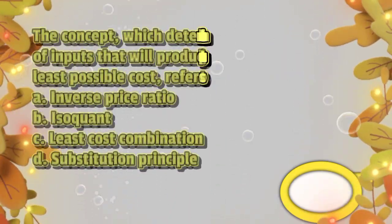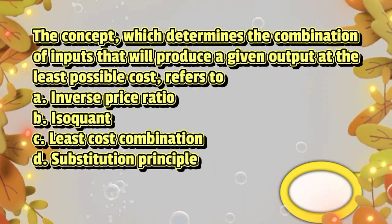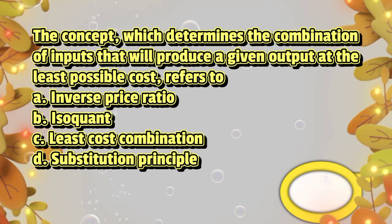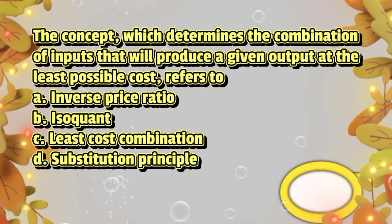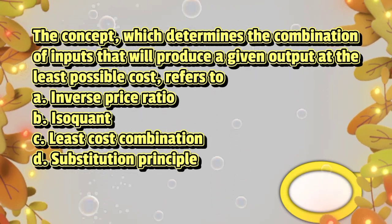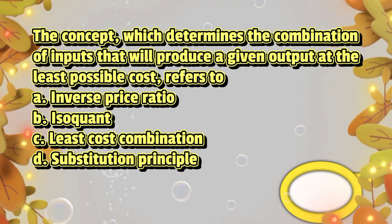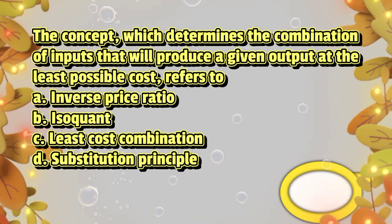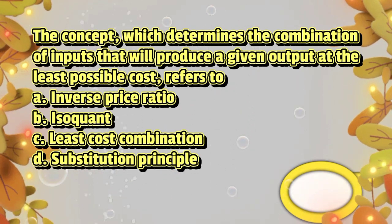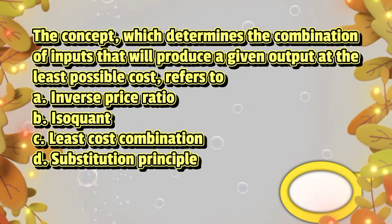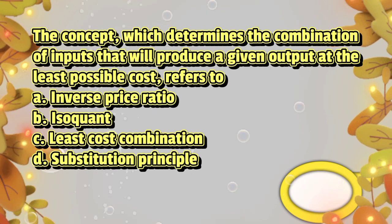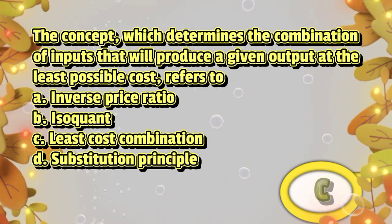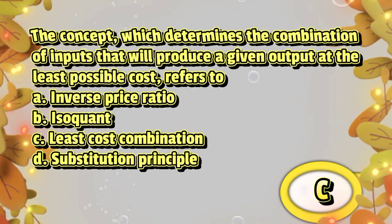The concept which determines the combination of inputs that will produce a given output at the least possible cost refers to: A. Inverse price ratio, B. Isoquant, C. Least cost combination, D. Substitution principle. The answer is letter C.